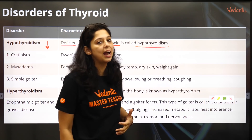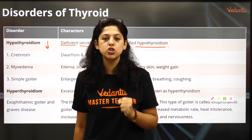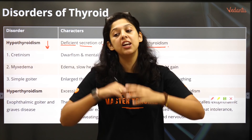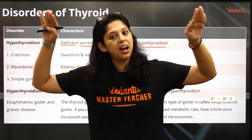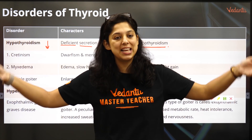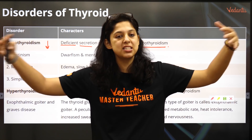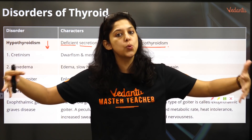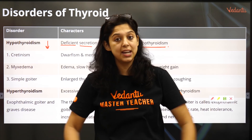The thyroid gland is a very important gland for metabolism of the body. Whenever the thyroid levels are less, the blood pressure is less, the energy is less, and the person starts to increase in weight and becomes very lethargic.